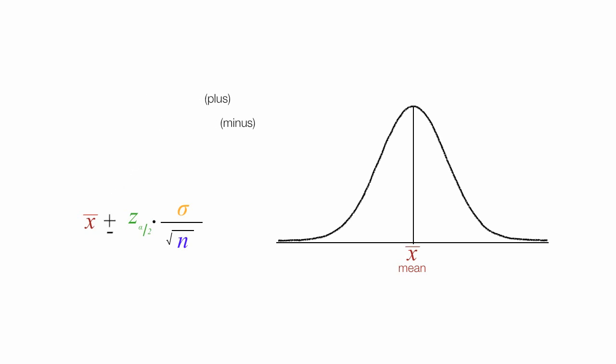The funky little z there is called the confidence coefficient, and I defined that in another video in some detail. The dot is used for multiplication. The orange symbol is called sigma, and it stands for standard deviation.